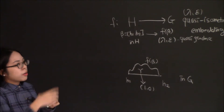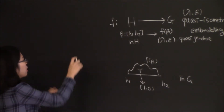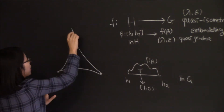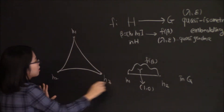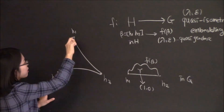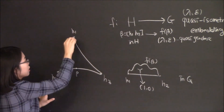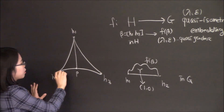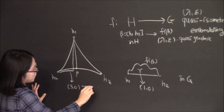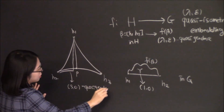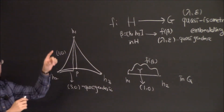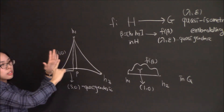Stability also implies hyperbolicity. Think about a geodesic triangle with vertices H1, H2, H3. Consider the nearest point on one path to another point. By some computation, we know one path is a 3,0 quasi-geodesic and the other is a 1,0 quasi-geodesic. By the second condition of stability, they are close, so indeed the triangle is slim.